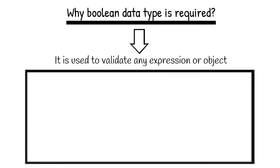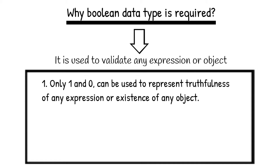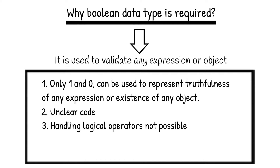Following are some reasons. First, if you don't have boolean data type, then we are only left with 1 and 0 to represent the truthfulness of any expression or existence of any object. This will be a bad approach because 1 and 0 are numeric integer data types in Python, which can be used for other purposes in a code block. Second, without boolean data type, the code will become unclear.